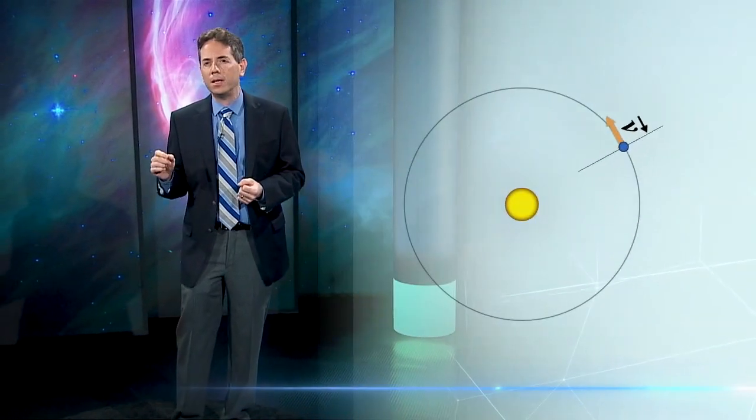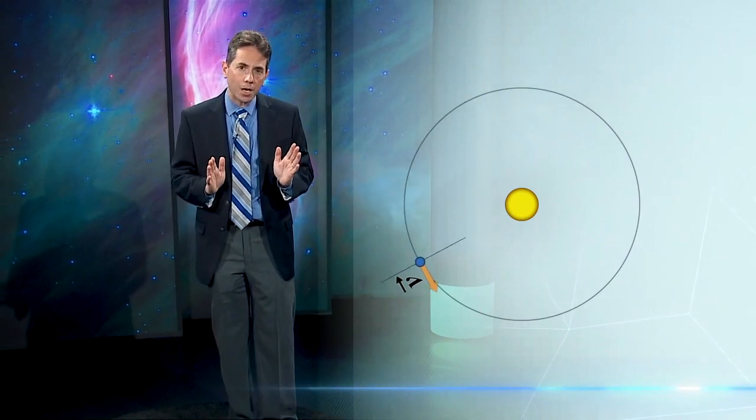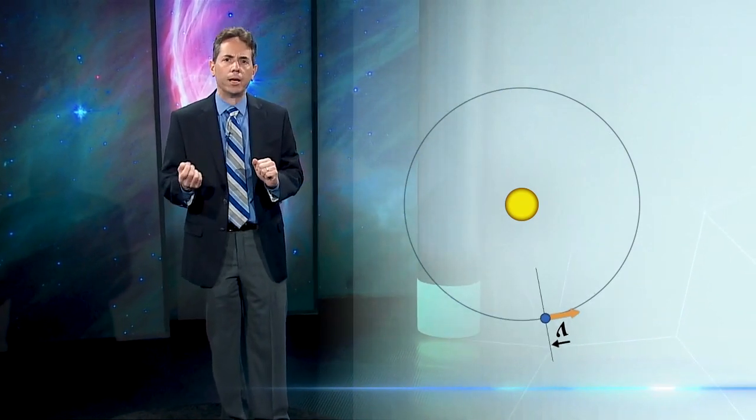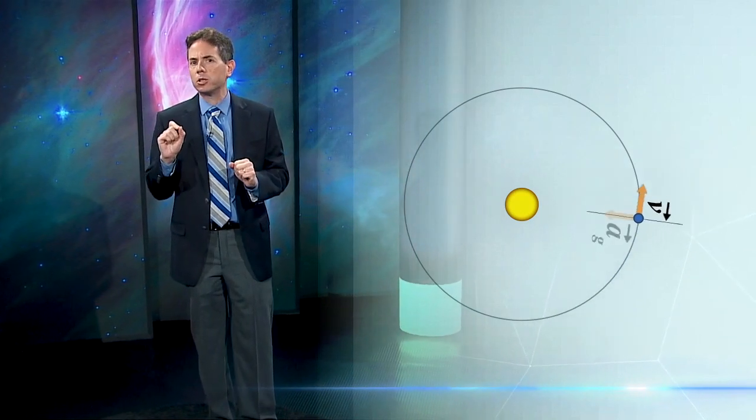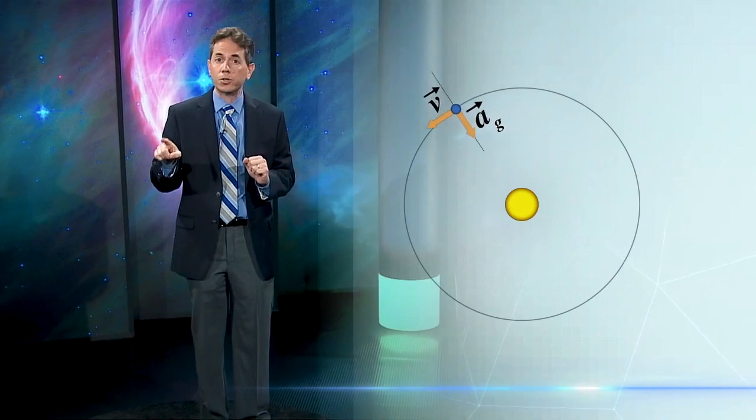Well, we might ask the same question about the Earth. If the Earth is attracted to the Sun, why doesn't it fall in and burn up? The answer in that case is that the Earth has a non-zero angular momentum, a sideways velocity in ordinary language. And the gravitational acceleration just keeps turning its velocity vector around in a circle.